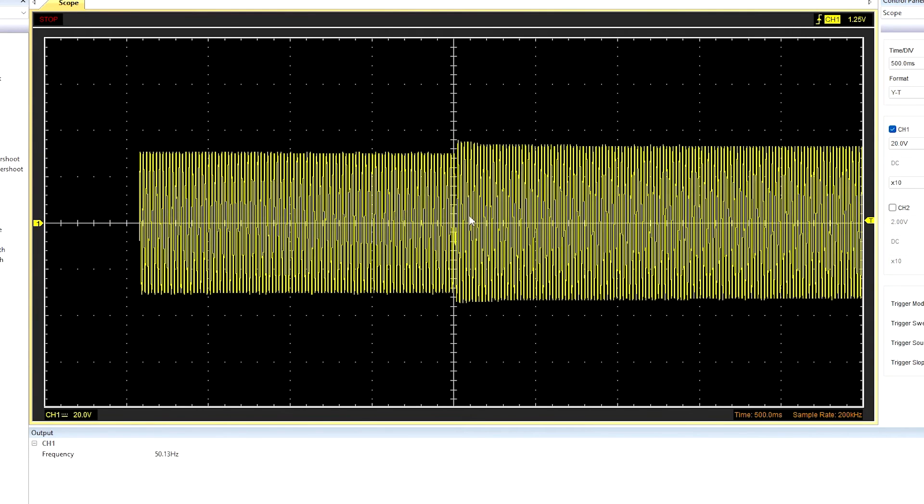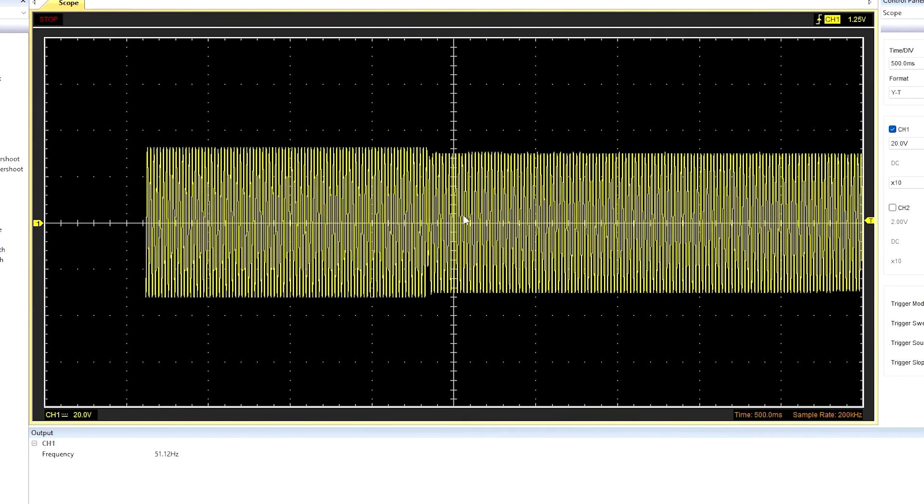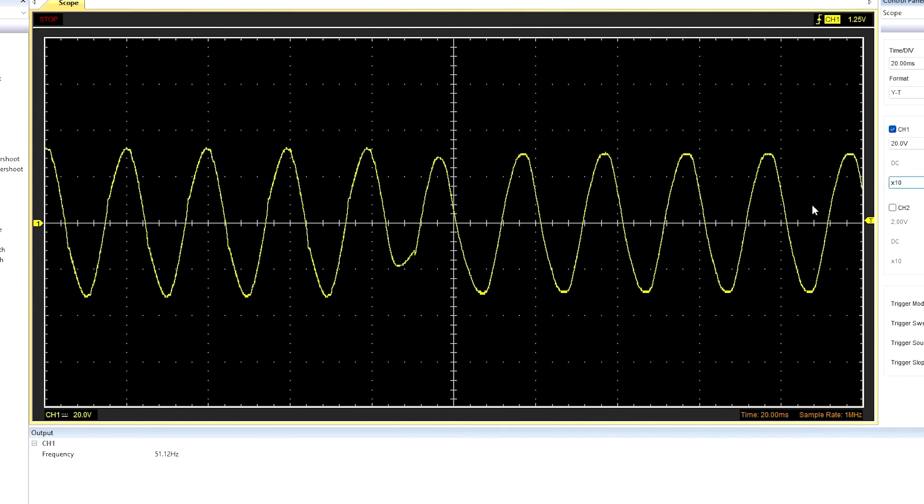OK, here is the switch over point. Mains failure occurred at a positive half cycle, and the inverter started at negative half cycle. The switch over time is approximately 6 millisecond. Let's see once again, inverter to mains, mains to inverter.